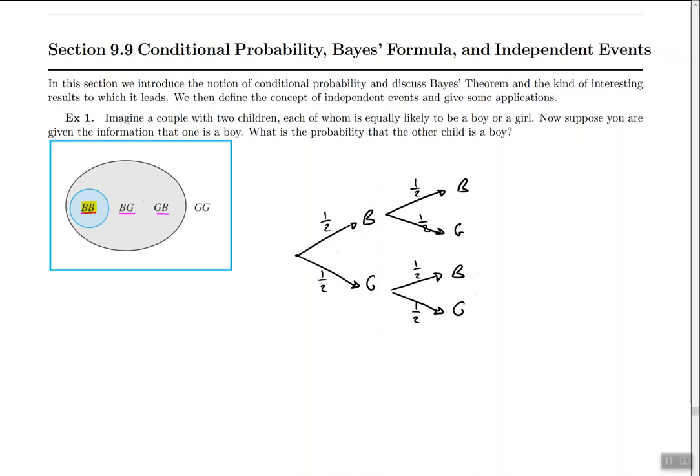Now every event in this dark gray circle or in the pink underlined events is equally likely. So therefore to get the boy-boy situation we need to take one out of the three events. So the answer is going to be one out of three.